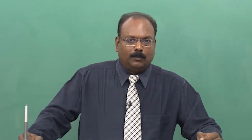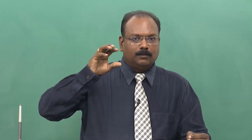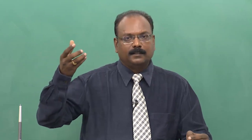How can we surmount these kinds of barriers in organizations? What is required is modification of the communication network. Direct access should be given — instead of using so many forms of communication, talking to so many people in between, using so many phone calls and email forwards, the concerned persons should be able to meet directly. Also, the dissemination should be done through several channels. For example, if the boss announced something on a loudspeaker but a flight passed and caused noise disturbance, people could not hear the date and time mentioned, so each person said something different about it.